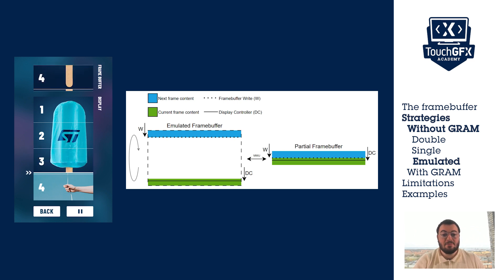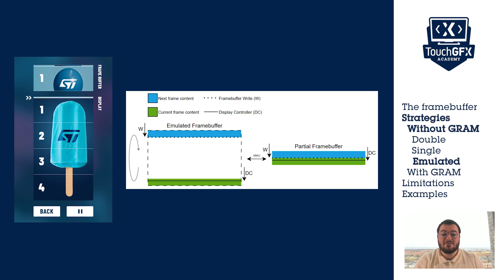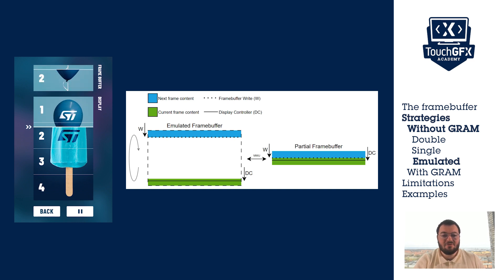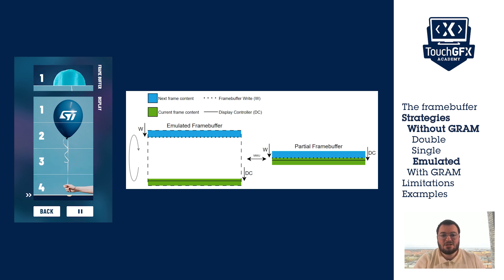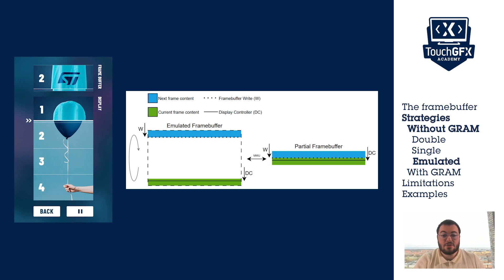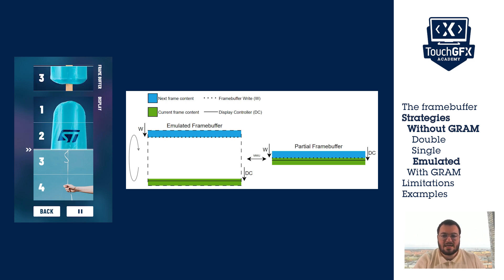Let's take the example on the screen. The partial framebuffer is one-fourth of the screen size, so if we want 60 fps, the render time will not be 16.6ms as usual, but just over 4ms. Just like the single framebuffer, the partial framebuffer renders and transfers constantly, so if we miss the timing, we will transfer the wrong data.